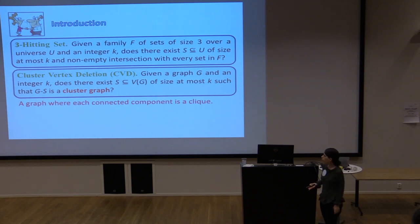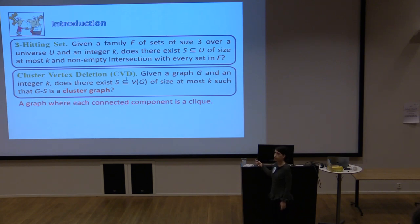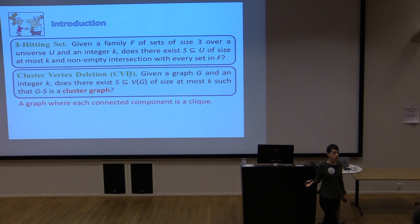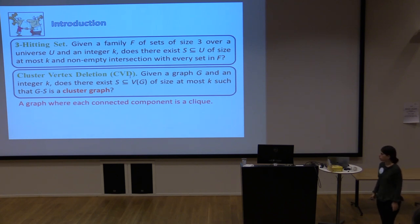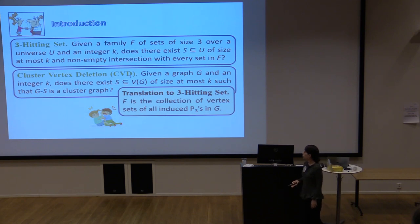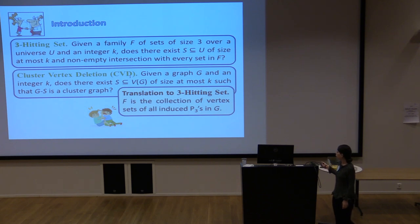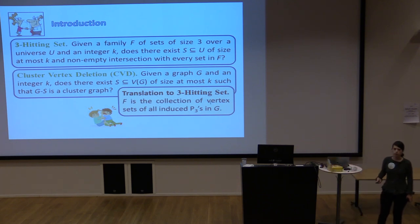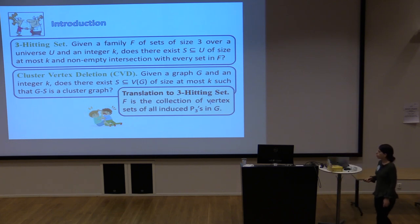One of the problems we looked at in this context is Cluster Vertex Deletion. Here you are given a graph G and an integer K, and you ask whether you can pick at most K vertices such that when you delete them, you get a cluster graph — a graph where every connected component is a clique. This can be cast as a special case of 3-Hitting Set: the family F is the collection of vertex sets of all induced P3s in G, since a graph is a cluster graph if and only if it has no induced P3 — an induced path on three vertices.